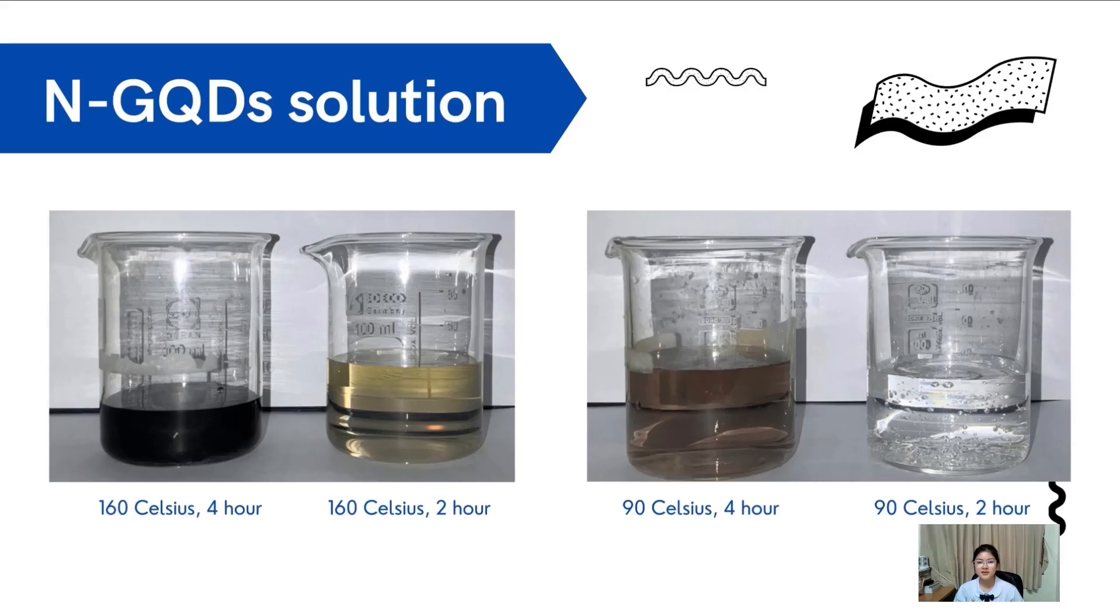These are our solutions. On the left side are 160 degrees Celsius, and on the right side are 120 degrees Celsius. It is obvious that for 160 degrees Celsius, solutions are more darker than the other one.